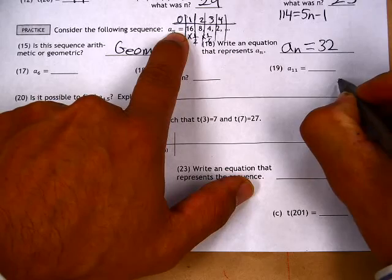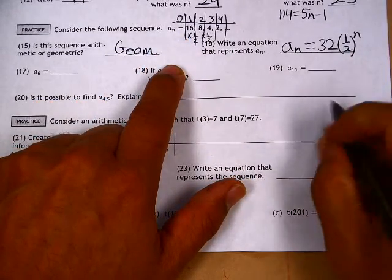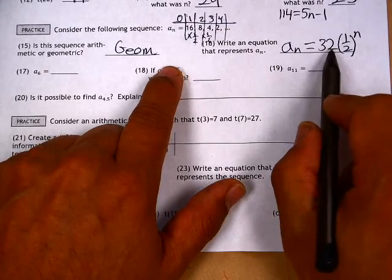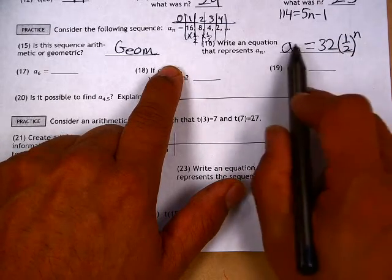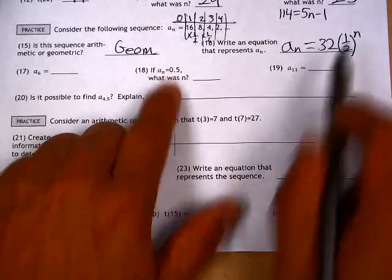And then the multiplier is one half, so one half to the nth, or y equals 32 one half to the x, or t of n is equal to 32 one half to the nth.